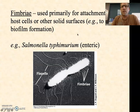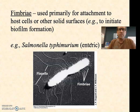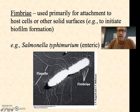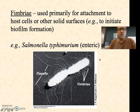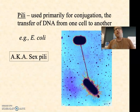Fimbriae are used primarily for attachment to host cells or other surfaces, such as initiating biofilm formation, and there are later videos on biofilms. Here's a picture of Salmonella typhimurium, which is one of these enterobacteria. You can see lots of these little short hair-like structures called fimbriae, as opposed to the very long and far fewer structures called flagella. We'll talk about flagella in just a minute and differentiate flagella from fimbriae, but first I want to differentiate fimbriae from pili.